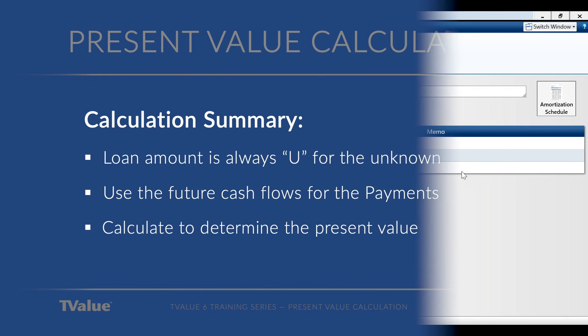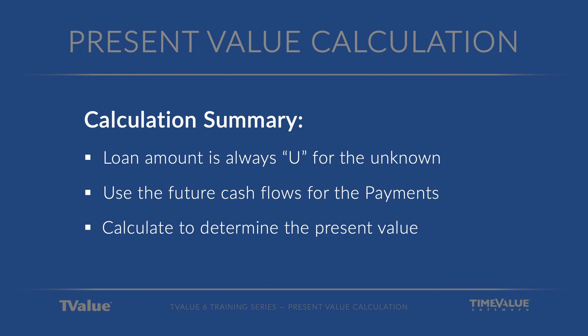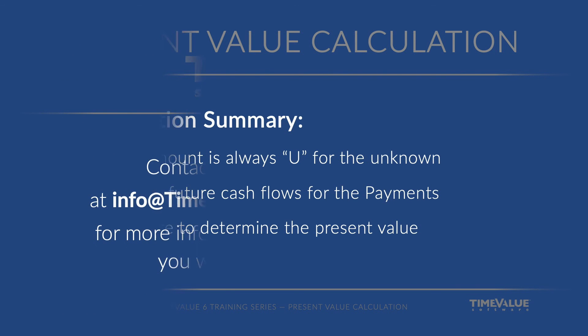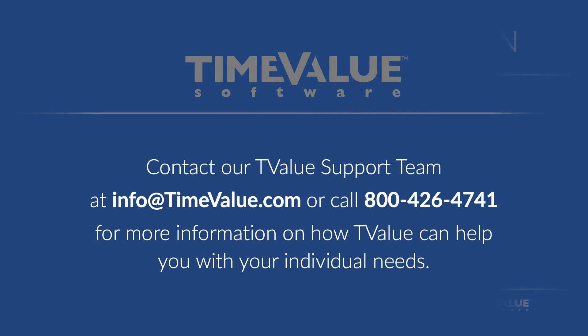So just a summary of our calculations: always put U for unknown for the loan line, use your future cash flows for the payments, and then calculate to determine the present value of the loan — very simple to do. If you ever need any help doing a calculation, feel free to give us a call at 800-426-4741, or email us at info@timevalue.com. Thanks for listening.